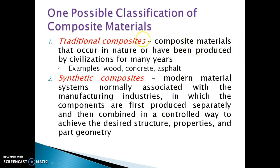One possible classification of composite materials is to divide them into traditional composites and synthetic composites. What is meant by traditional composites? Those are composite materials that occur in nature and that have been produced by civilizations for many years. Those are called traditional composites. For example, some of the traditional composites are wood, concrete, etc.